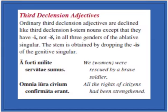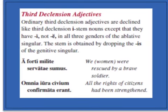Third declension adjectives can be a little bit tricky. They decline like I-stems, except there's always an I in the ablative singular for all three genders. When you decline adjectives, remember they agree with the noun they modify in case, number, and gender — not declension or ending.